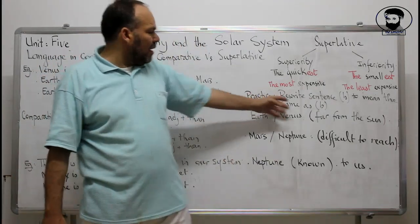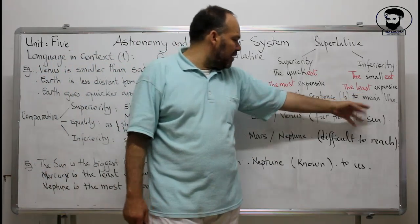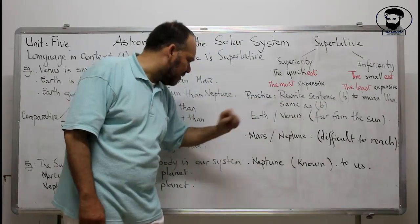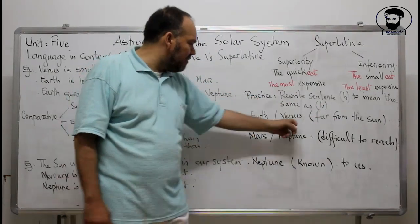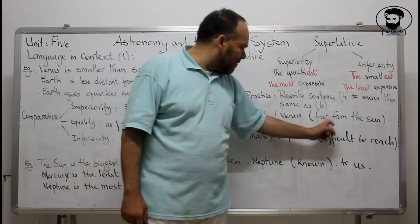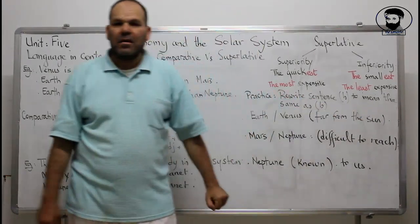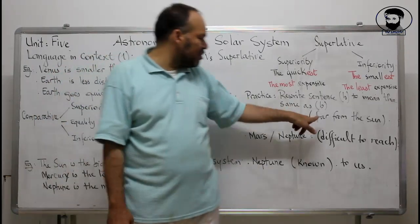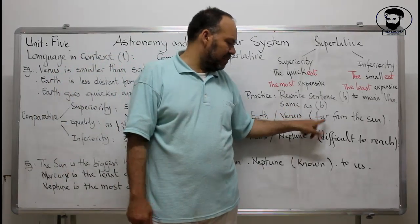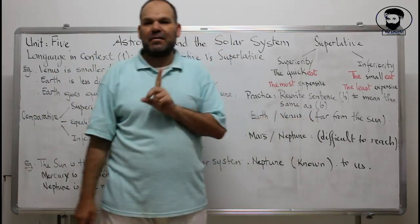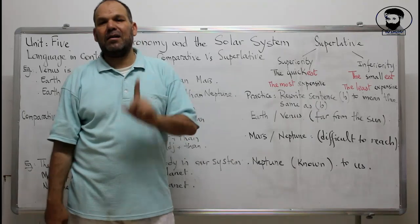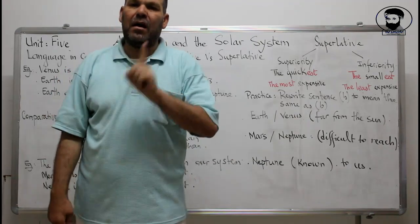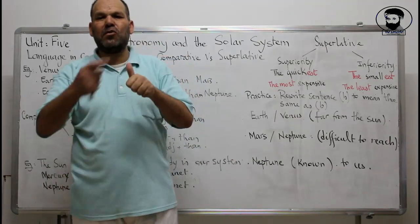Now let's write a sentence. The task is: write sentence B so that it has the same meaning as sentence A, using Earth and Venus and how far they are from the Sun. 'Far' is a short adjective, but in English 'far' is an irregular adjective — like 'good.' You don't say 'gooder,' and similarly you don't say 'farer.'